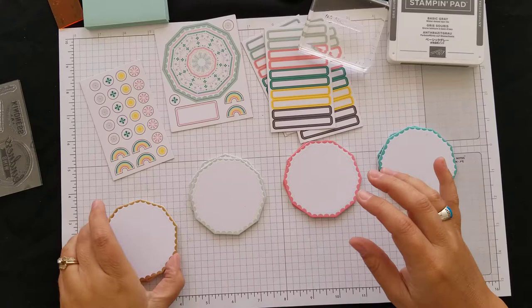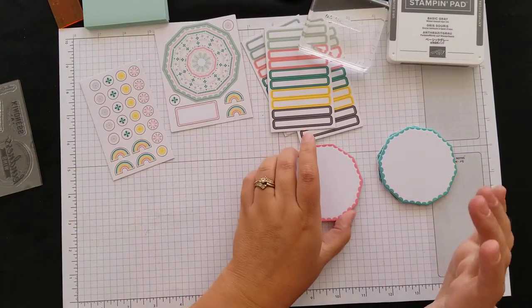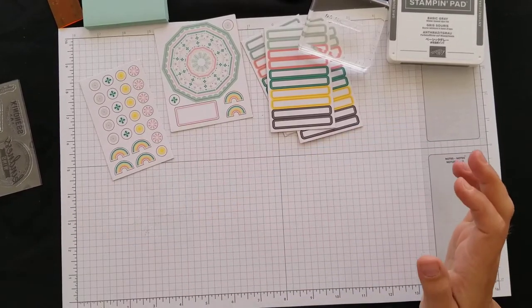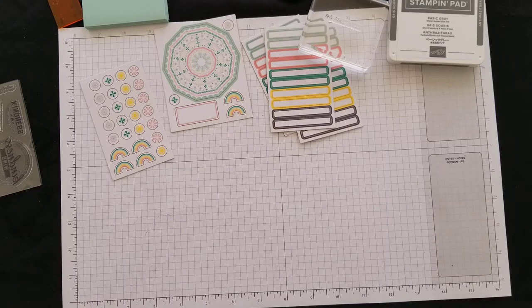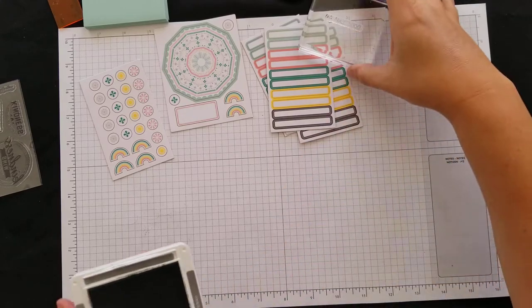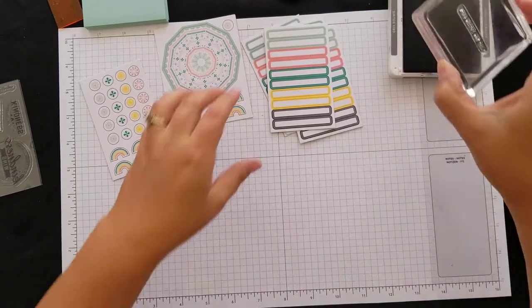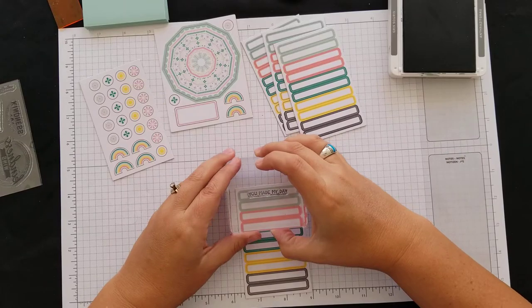All right, so with that being said, here's what I'm going to do. There's two each of the colors, and instead of making them cards, what I'm going to do is actually make them tags for gift bags. So I'm going to grab here and there's two green.